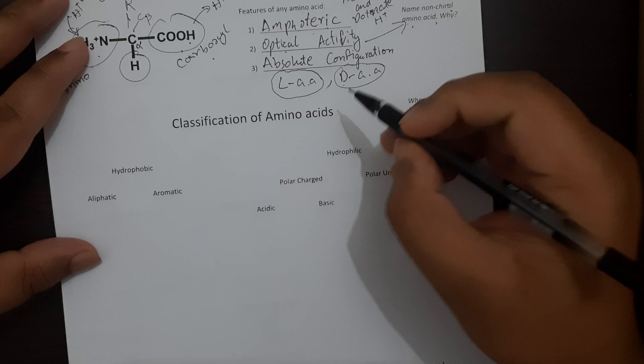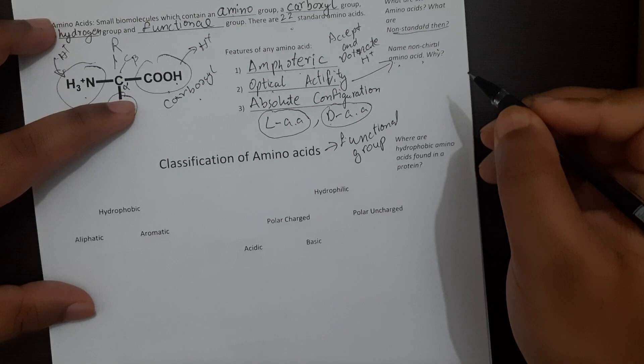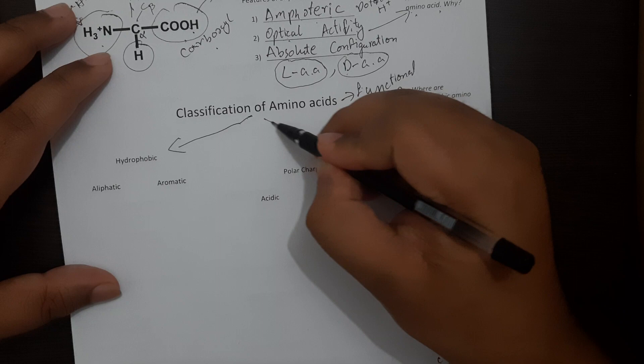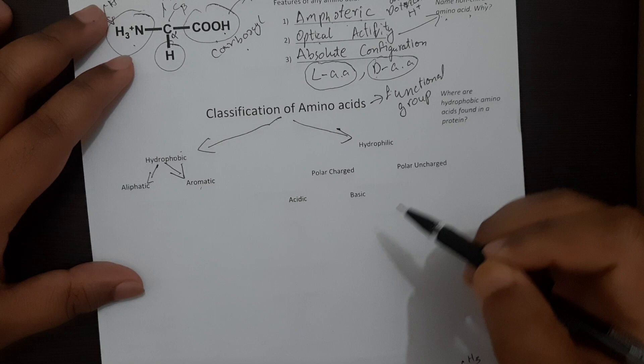Amino acid classification will be mainly done based on the functional group present. The classification can be divided into two broad classifications. One is hydrophobic amino acids. Second there are hydrophilic amino acids. The hydrophobic amino acids can be further subdivided into aliphatic hydrophobic amino acids and aromatic hydrophobic amino acids.